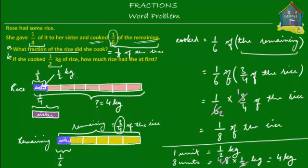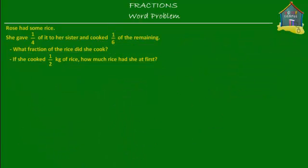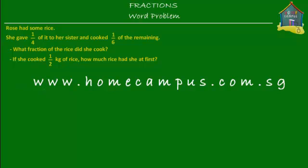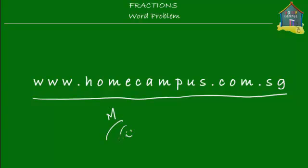Eight times half a kg simplifies to four kilograms, which means the whole pink block is equal to four kilograms. So if she cooked half a kg of rice, she had four kilograms of rice at first. That brings us to the end of this word problem. Go and solve some other word problems at www.homecampus.com.sg. Don't forget to practice because practice makes perfect. This is M signing off for now. Bye-bye.